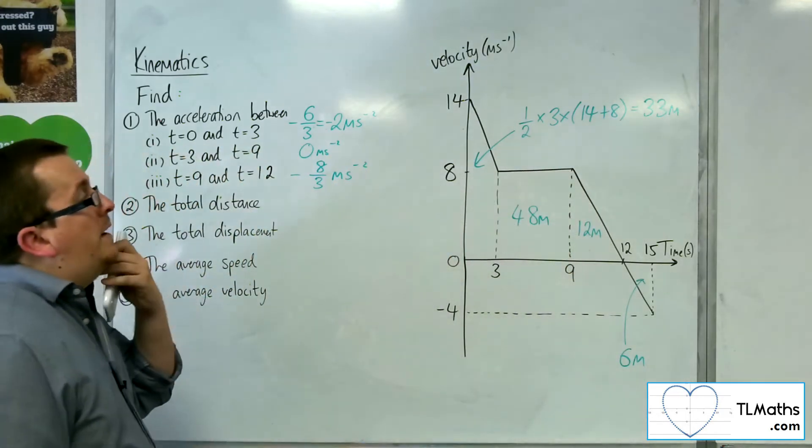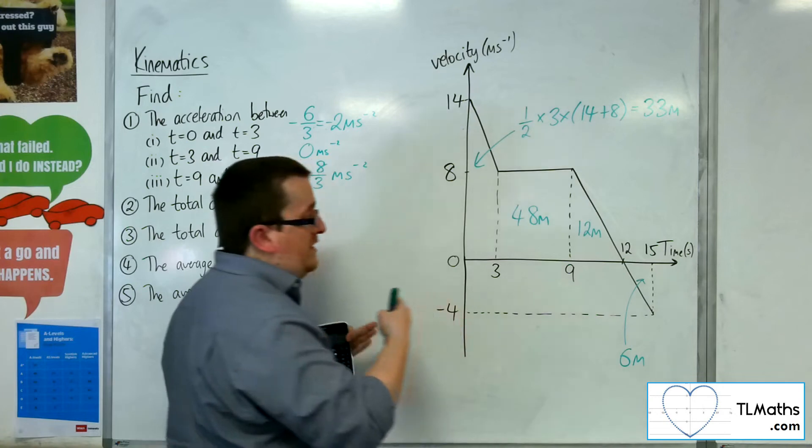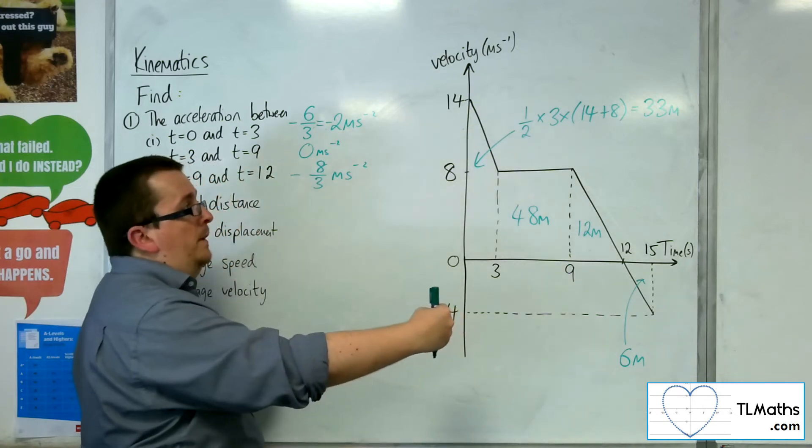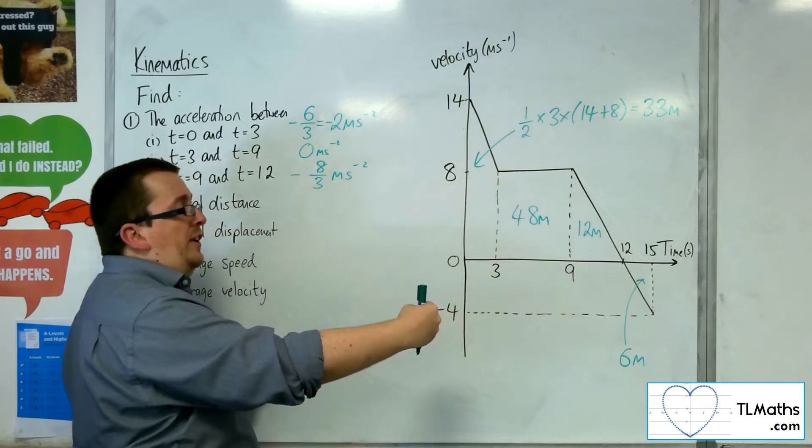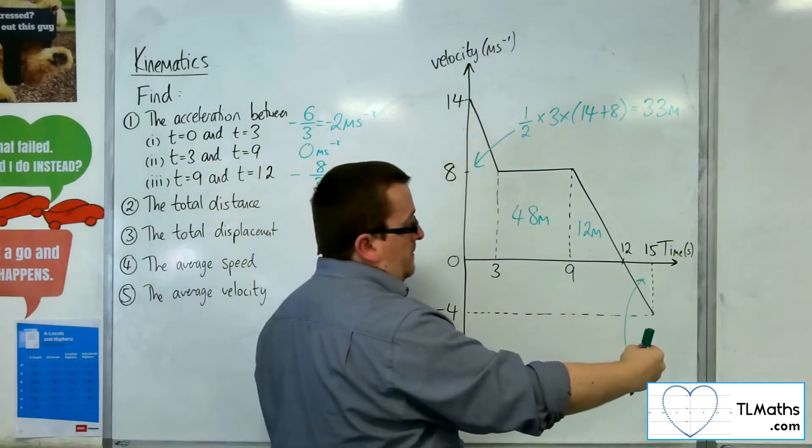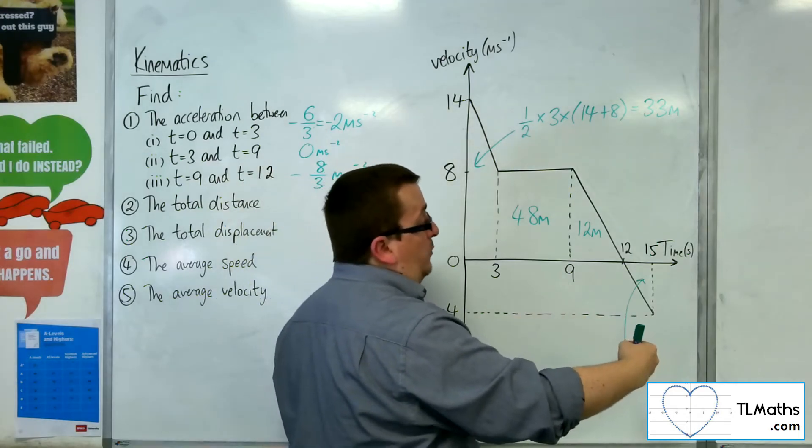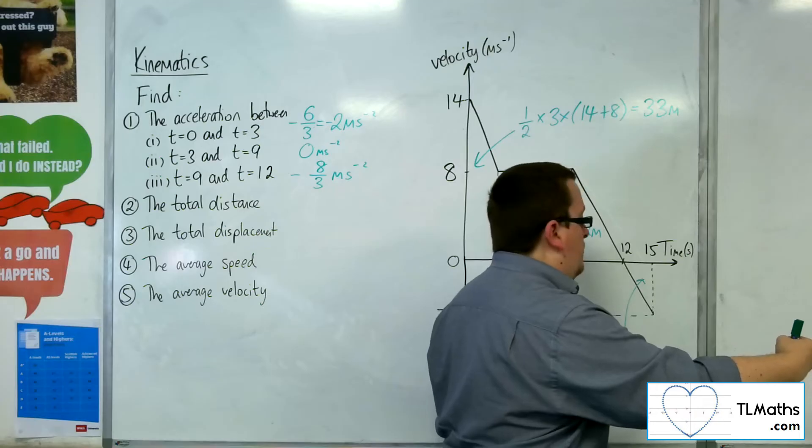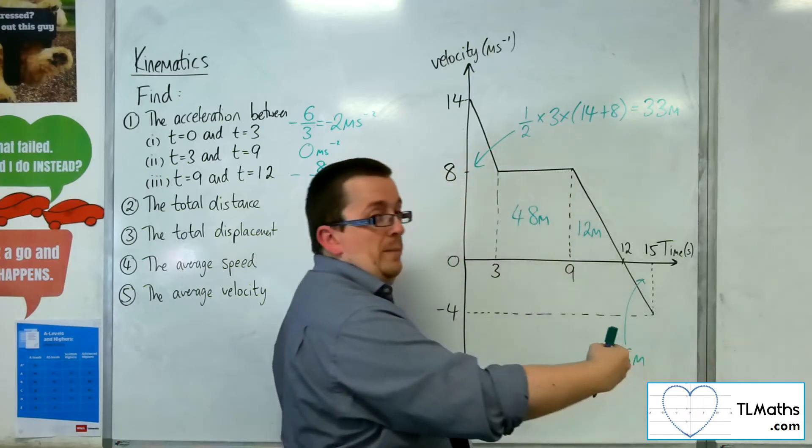So what's happening is in the first 3 seconds we travel 33 metres. Then in the next 6 seconds we travel 48 metres. Then in the next 3 seconds we travel 12 metres. And then in the next 3 seconds we go back 6 metres.